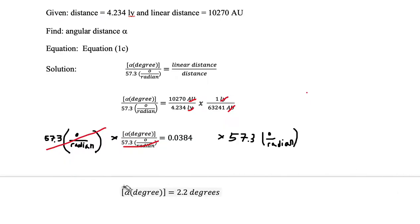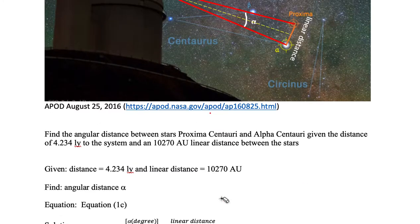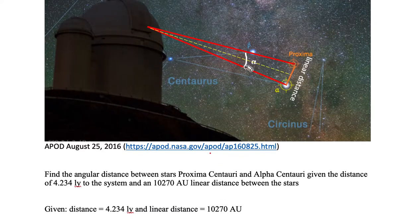And so here's our answer. This is what we're looking for. This alpha in terms of degrees. So we're looking for this quantity and sure enough we got a number 2.2 and the unit is degrees exactly what we were looking for. So now we know that the angular separation between Proxima Centuri and Alpha Centuri is 2.2 degrees.